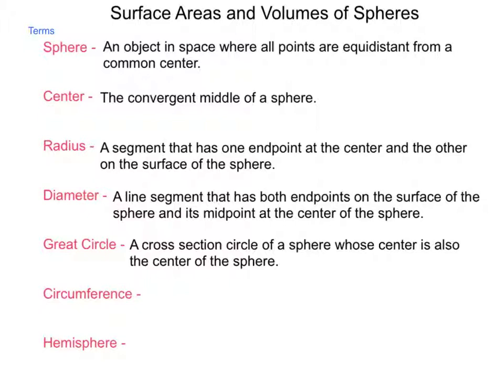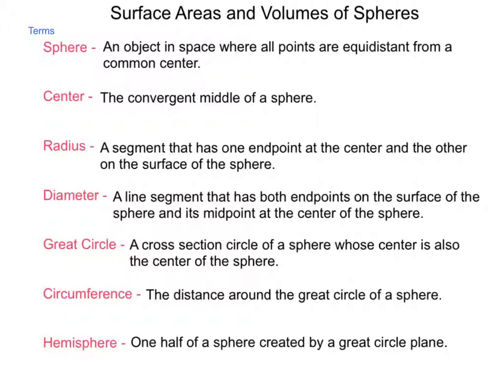From this, we get our circumference, which is simply the distance around the great circle of a sphere. The maximum distance around a sphere would be the circumference of that sphere, rather than a lesser circle created by a cross-section. And last is hemisphere, which is one half of a sphere created by a great circle plane. If we were to cut our sphere along that great circle, we'd create two hemispheres.